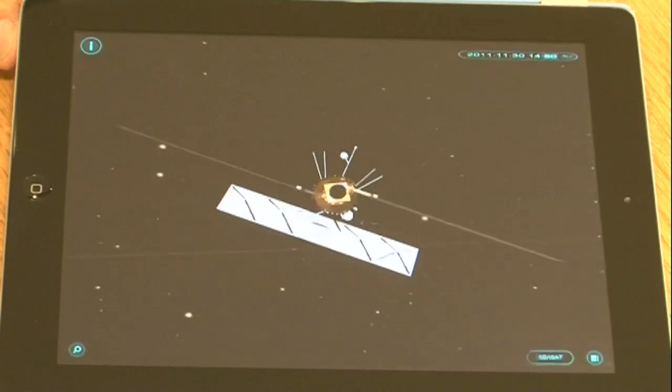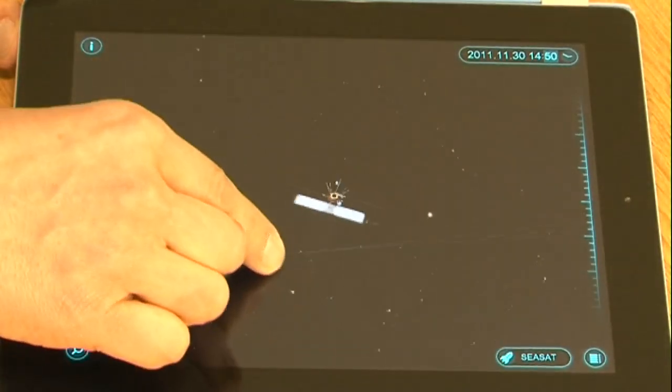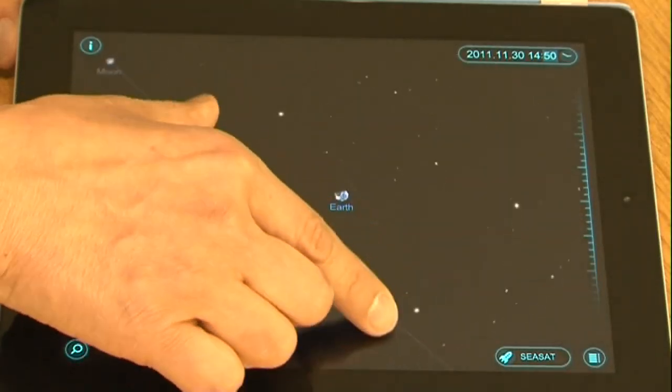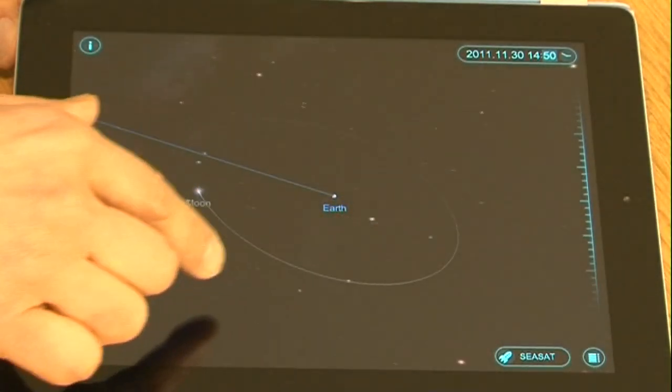But one of the great things about SolarWalk is really getting to see the scale of the universe around us. So there's our Earth, and as we zoom out, you can see the Moon.